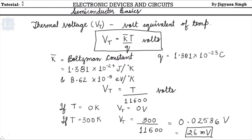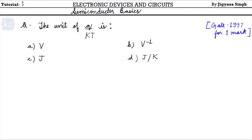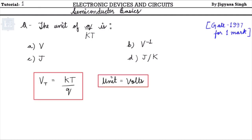Let's solve a GATE question based on this formula. This question was asked in GATE 1997 for one mark: 'What is the unit of Q/kT?' We know VT = kT/q has units of volts, so q/kT is simply the reciprocal, giving units of volts inverse, or per volt. The answer is option B.